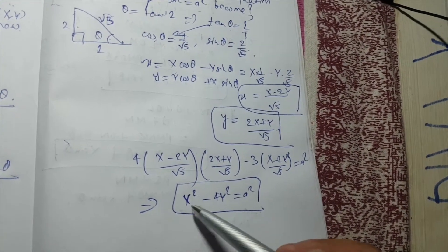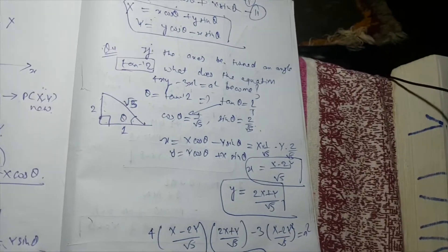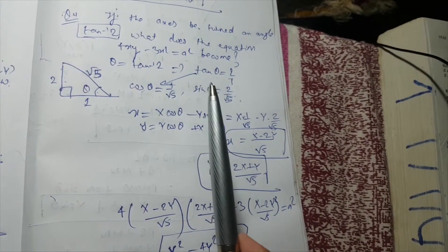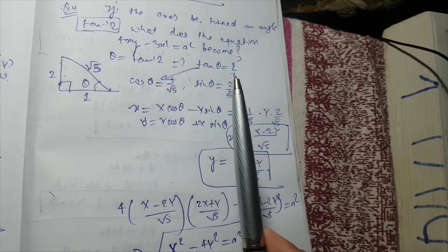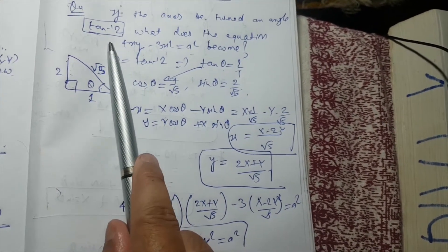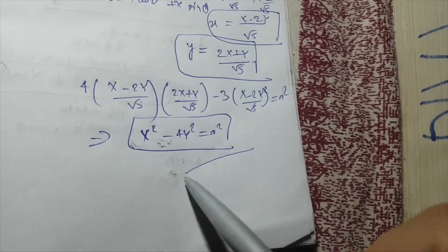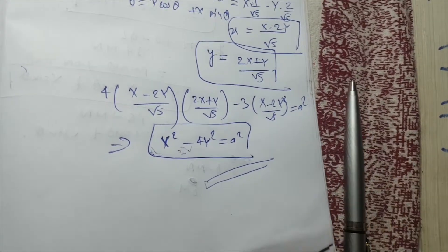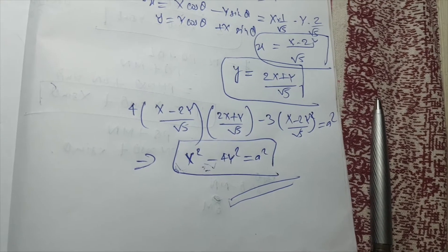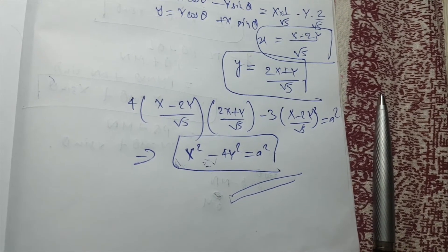So X² − 4Y² = a² is your new equation in terms of the new coordinates capital X and capital Y, when the coordinate system is rotated through an angle of tan⁻¹(2). That's it for the video — thank you, bye bye.